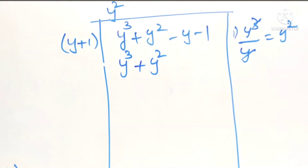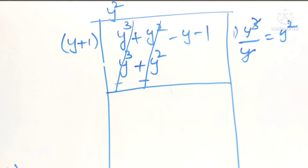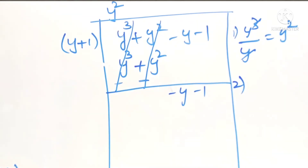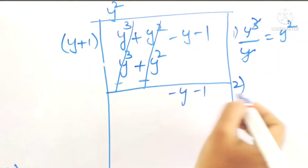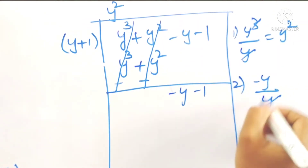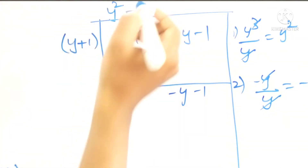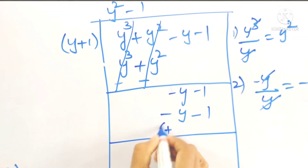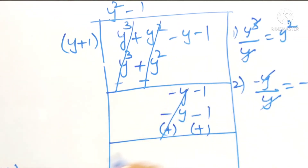Change the signs: minus, minus. The same terms cancel. The remaining terms are -y and -1. For the next term in the quotient, divide -y by y, giving -1. Write -1 in the quotient. y times -1 gives -y, and 1 times -1 gives -1. Change signs again; same terms cancel and the remainder is 0. The quotient is y² - 1.